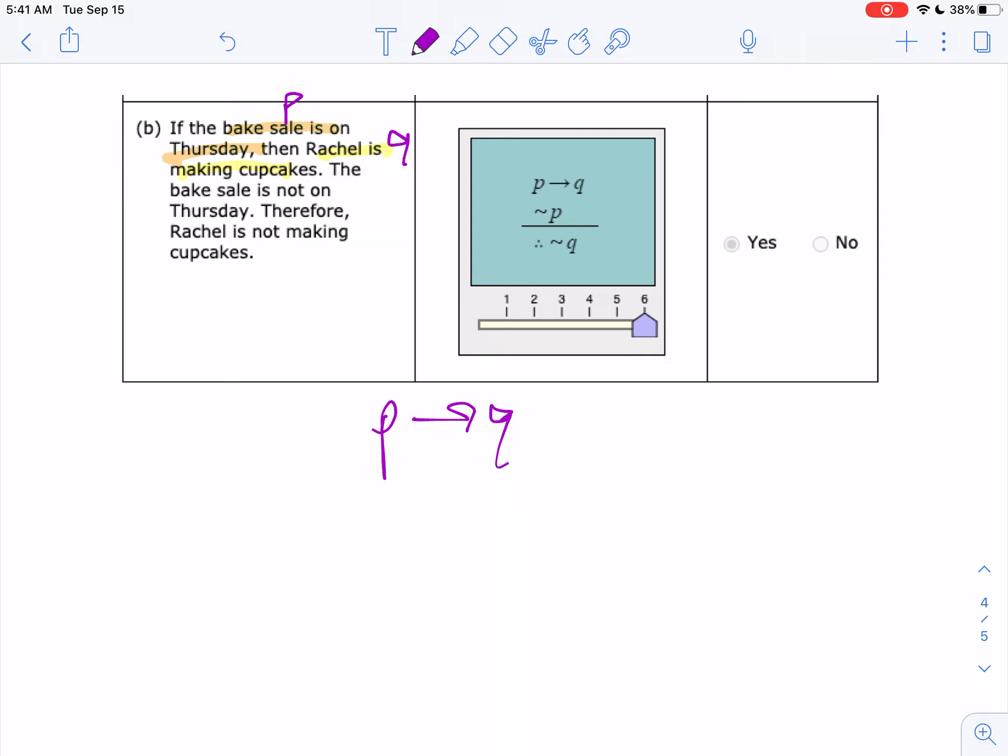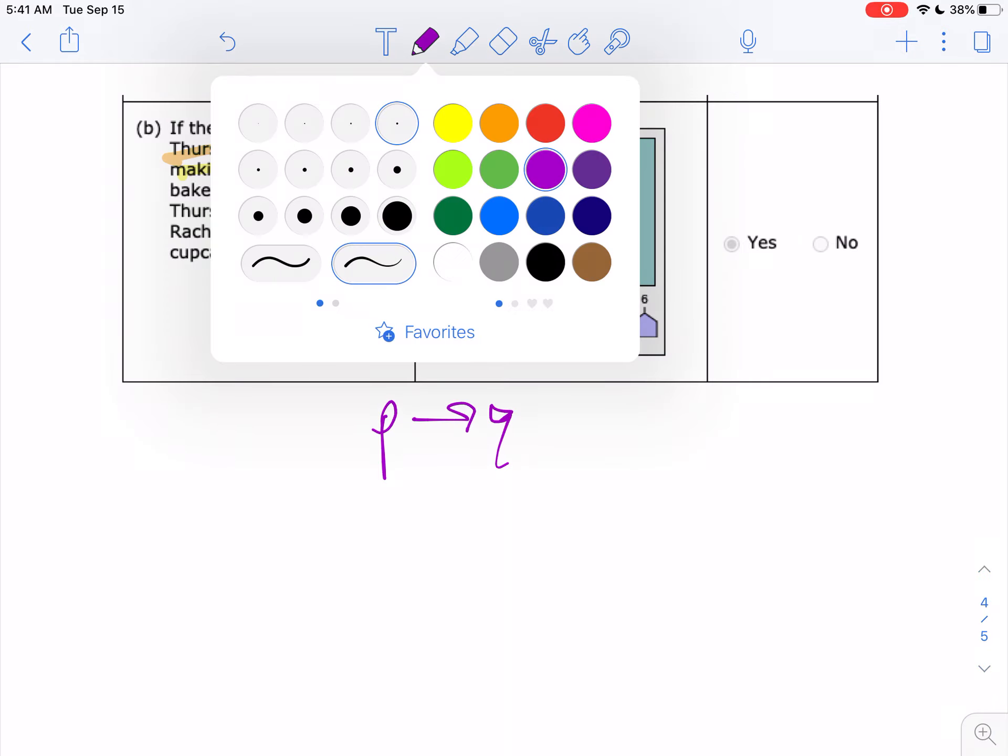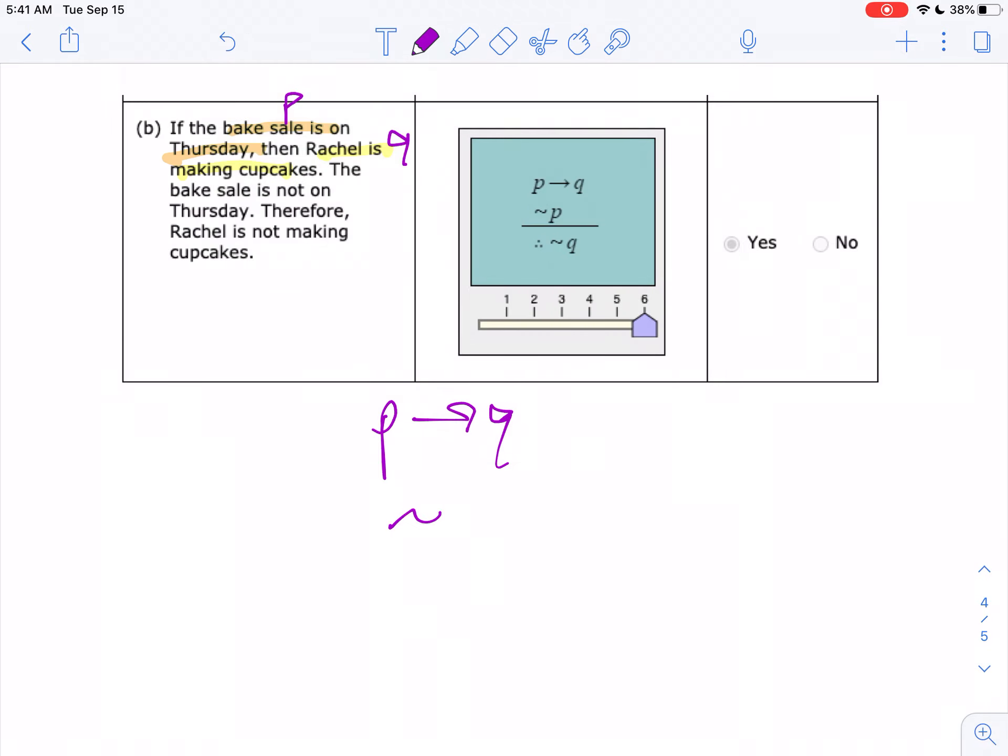The bake sale is not on Thursday. So that's the opposite, or the negation of the hypothesis. See the problem? Which you have correct. Okay? Therefore, not Q. Uh-oh.